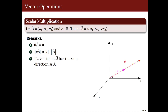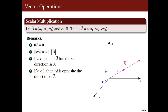If c is positive, then the vector c·a points in the same direction as the original a. For example, 2a points in the same direction as a. However, if c is negative, then the scalar product c·a points in the opposite direction of a. Also, if the absolute value of c is greater than 1, then the resulting vector c·a is longer than the original vector — for instance, 2a is twice as long as a. If the absolute value of c is less than 1, then the resulting vector is shorter than a. In this case, negative one-half times a is half as long as a, and since c is negative, it also points in the opposite direction.